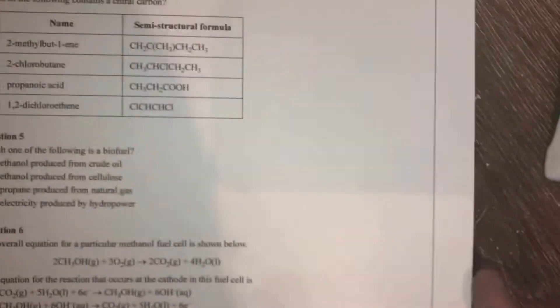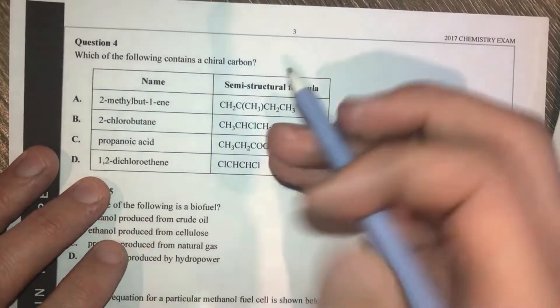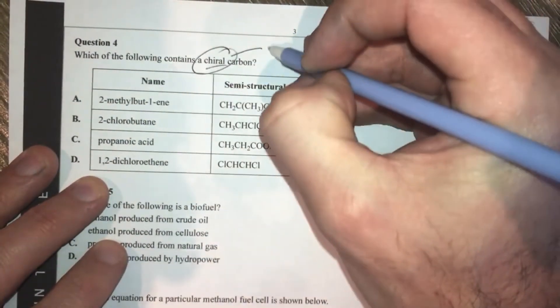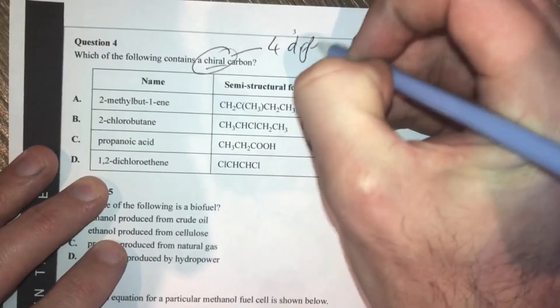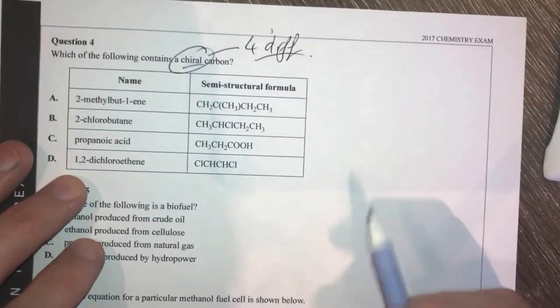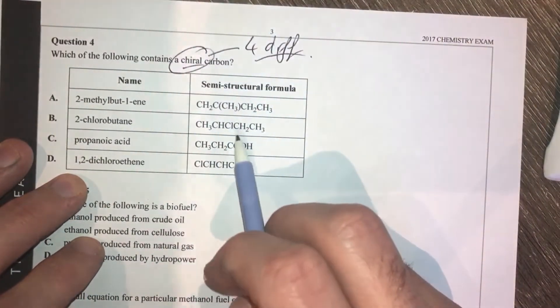Looking into question 4, quickly. Which of the following contains a chiral carbon? Chiral carbons attach to four different things. So let's have a look to see here if we've got a carbon with four different things attached to it.